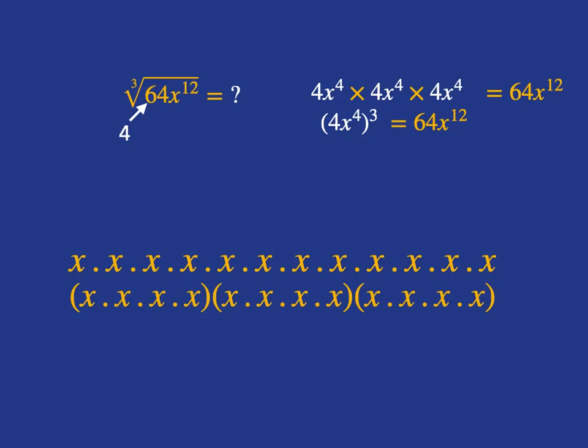This is because 4 times 4 times 4 is 64. And if you look at x to the 4 times x to the 4 times x to the 4 — x to the 4 is 4 x's multiplied together, then you've got another 4 x's multiplied together, and then another 4 x's multiplied together. So in total, you've got 12 x's multiplied together. And so this tells us the cube root of 64x to the 12 is just 4x to the power of 4.